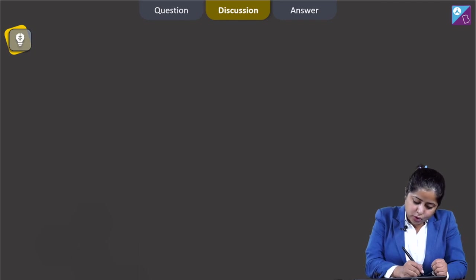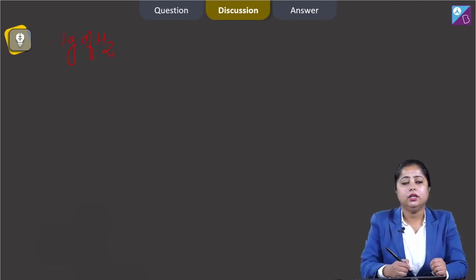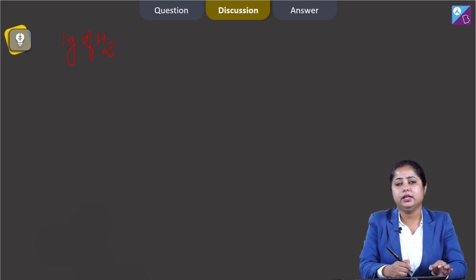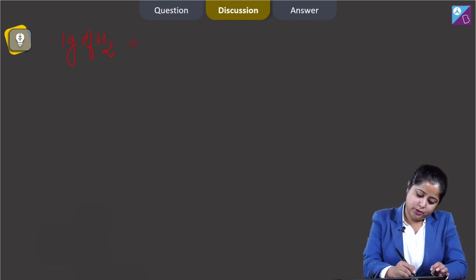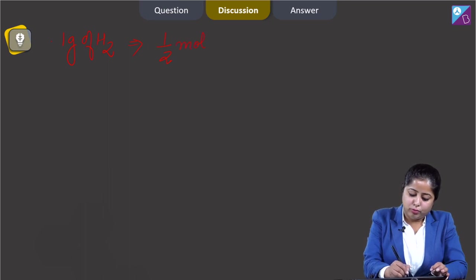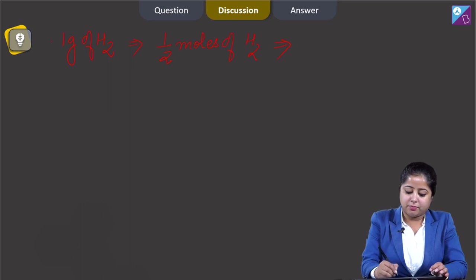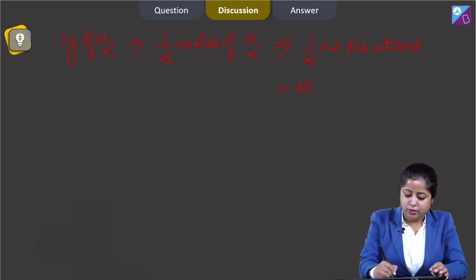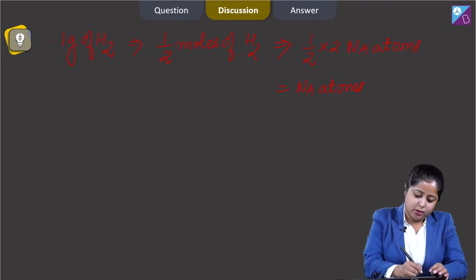The very first option is 1 gram of H2. We will calculate the number of moles: number of moles = 1/2 moles of H2. Number of atoms = (1/2) × 2 × NA = NA atoms.